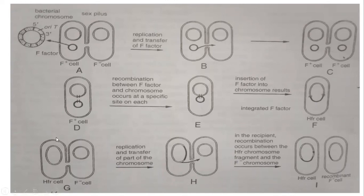When conjugation occurs between an HFR cell and an F- cell, the HFR cell's chromosome replicates and a parental strand of this chromosome is transferred to the recipient cell. The replication of the HFR chromosome begins in the middle of the integrated F-plasmid, and a small piece of the F-plasmid makes its way into the recipient cell. This piece of donor chromosome integrates into the recipient DNA, and this new cell is called a recombinant F- cell.